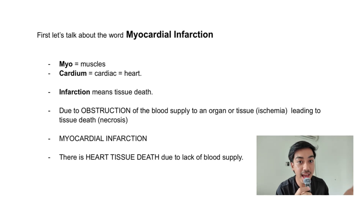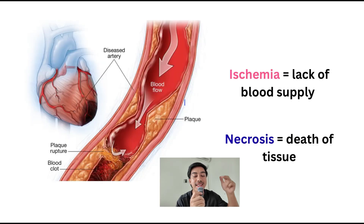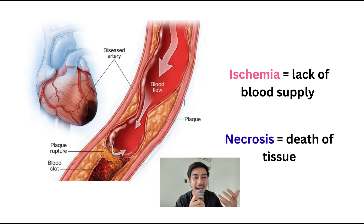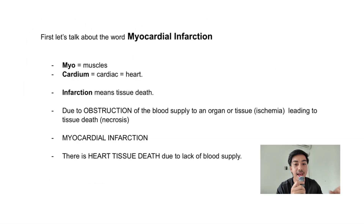And what causes the death? It's the obstruction of the arteries. When there is obstruction in the arteries, there is lack of blood supply, and the word for that is ischemia. Because of the lack of blood supply in that tissue or organ, it can lead to death, which is necrosis. So myocardial infarction is the death of the heart muscles due to the lack of blood supply.